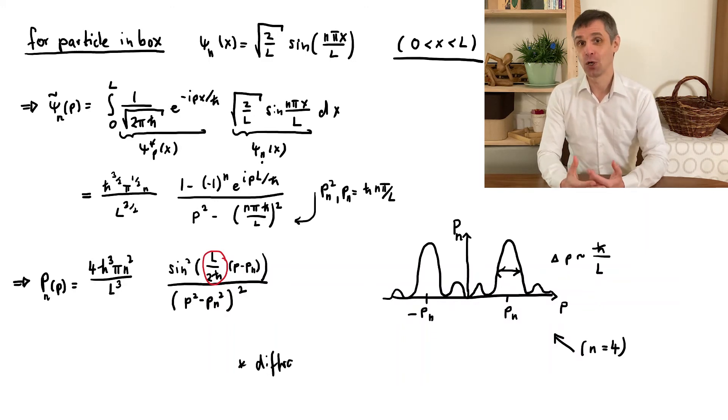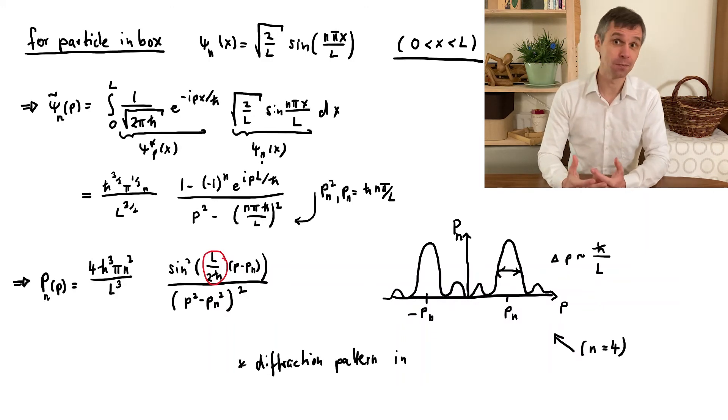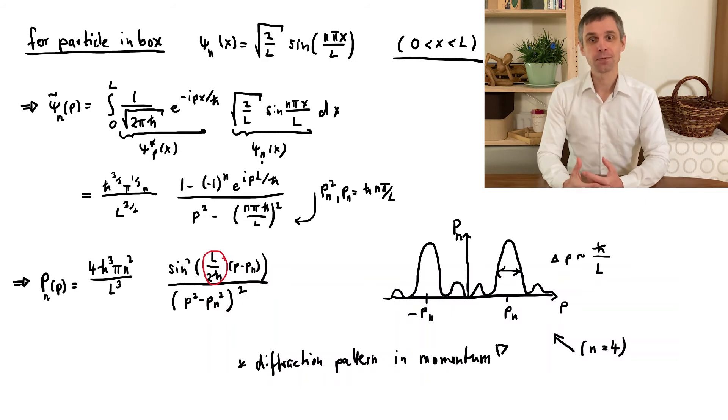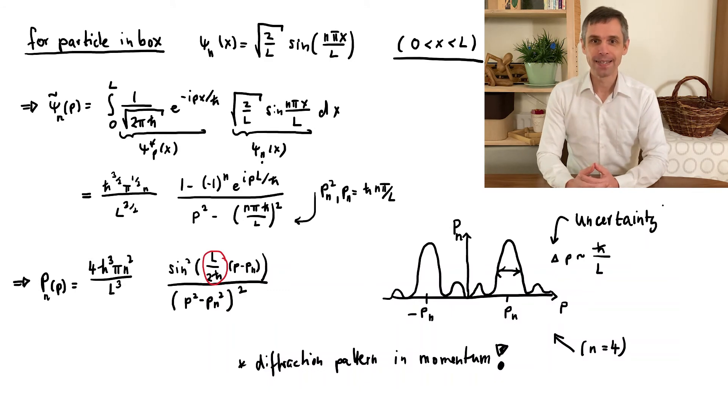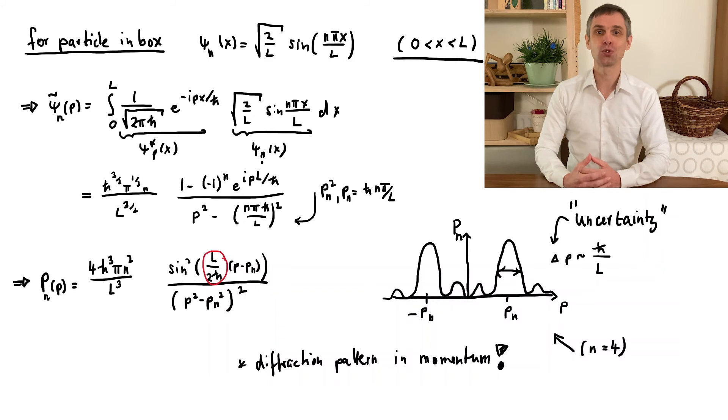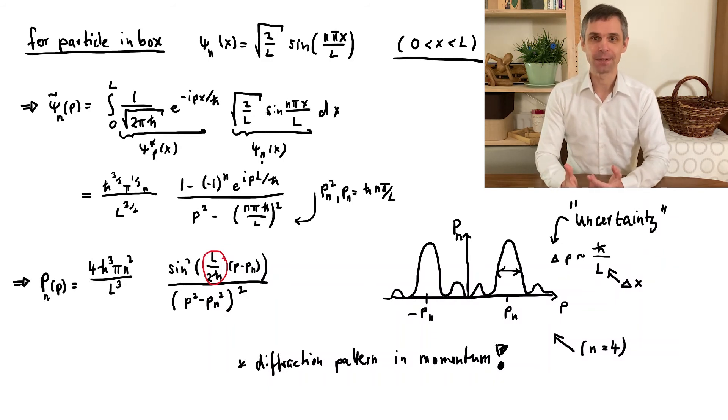So we now see that we also get some sort of diffraction pattern in momentum, and this is reflected by a spread in momentum, an uncertainty in its value. Our expressions show that this uncertainty increases when we reduce the size of the region L.